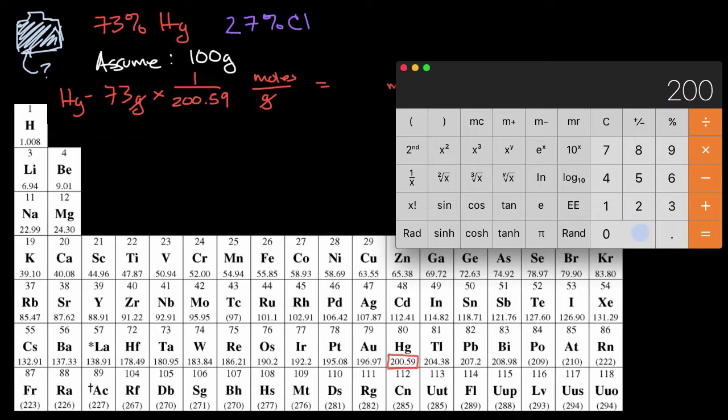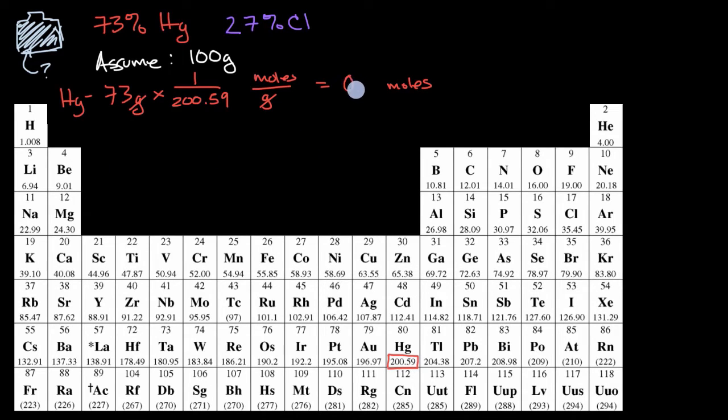Divided by 200.59 is going to be equal to 0.36. And I'll just say 0.36 because this is going to be a little bit of an estimation game with significant digits. I only have two significant digits on the original mass of mercury. So 0.36 moles, roughly.